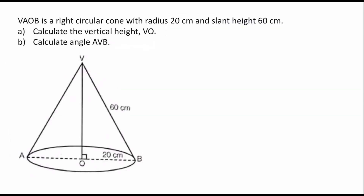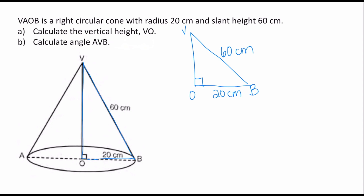Let's take a look at this second problem. It says VAOB is a right circular cone with radius 20 centimeters and a slant height of 60 centimeters. Calculate the vertical height VO, and calculate angle AVB. I'm going to once again work with the right triangle on the right-hand side of the cone and redraw it so we can clearly see what we're working with. The slant height is 60 centimeters and the radius is 20 centimeters. Notice that VO is the vertical height, so it forms a 90-degree angle, shown by the little square on your screen.